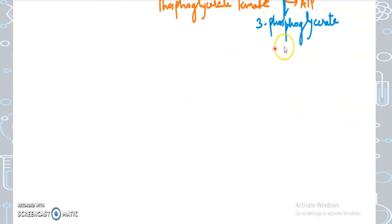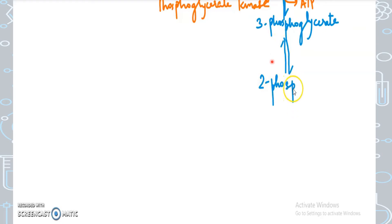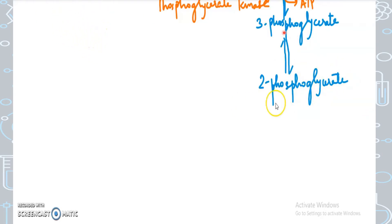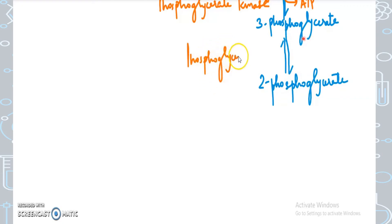In the next step, 3-phosphoglycerate is converted into 2-phosphoglycerate. There is no addition or deletion — it is just the phosphate shifting from the third carbon to the second carbon. When a phosphate group shifts position, the enzyme is called a mutase. So the enzyme here is phosphoglycerate mutase.